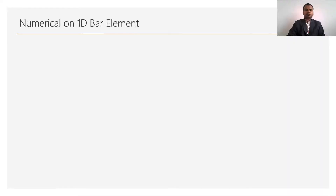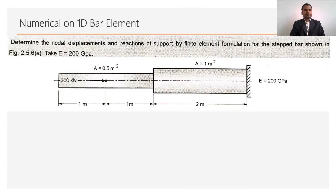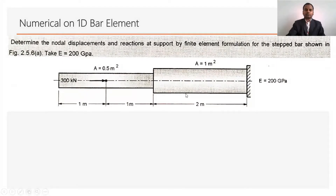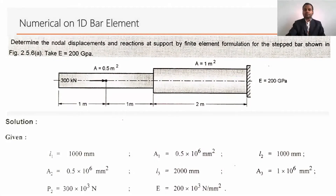The numerical on the 1D bar element is to determine the nodal displacement, stresses, and reaction at support by finite element formulation for the stepped bar as shown in the figure. This stepped bar has two cross sections: the first cross section has an area of 0.5 m², the second cross section has an area of 1 m². The load is given at the center of the first cross section, and the length of both cross sections is 2 meters. The modulus of elasticity for both cross sections is the same, that is 200 × 10³ N/mm².